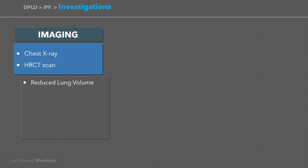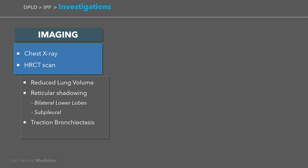The patterns seen on imaging include reduced lung volumes. Reticular shadowing can be seen in both lower lobes and is predominantly peripheral and subpleural. In more advanced disease, honeycombing cysts and traction bronchiectasis can be seen. When these features are present on high-resolution CT scan, it has a high positive predictive value for the diagnosis of idiopathic pulmonary fibrosis.